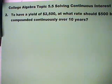College Algebra, Topic 5.5, Solving Continuous Interest Problem. To have a yield of $2,500, at what rate should $500 be compounded continuously over 10 years?